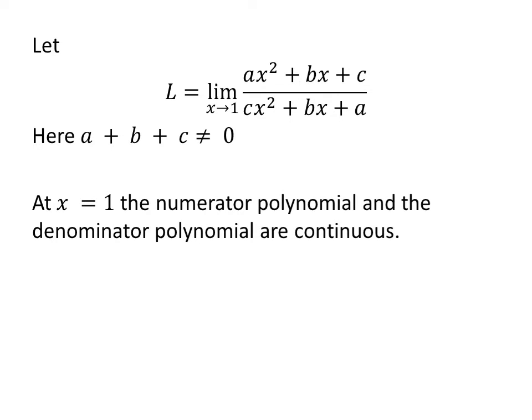At point x = 1, the numerator polynomial ax² + bx + c and the denominator polynomial cx² + bx + a are continuous. So, we can plug in 1 for x to get the limit.